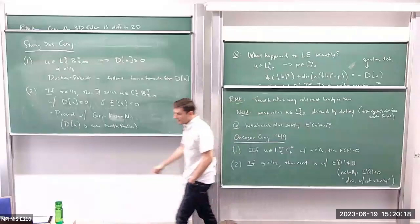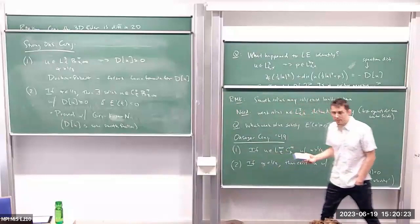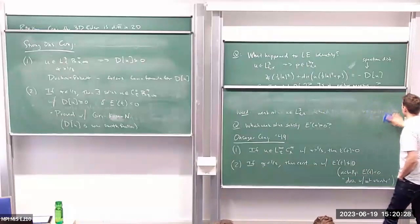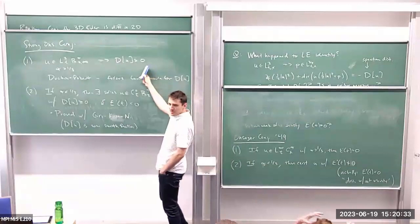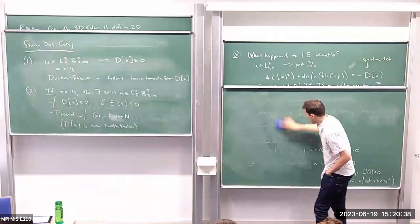The goal for today is to motivate this conjecture and preview the rest of the week. And if we have time today, we'll prove the E-gap, which is essentially the rigidity part.